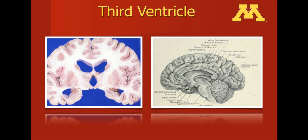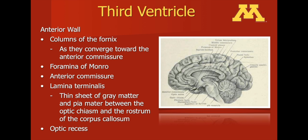Also appreciating in this picture the corpus callosum, which forms the roof of the third ventricle. This consists of the genu, the body, and also the splenium. The anterior wall of the third ventricle is formed by the columns of the fornix, the fornix being involved in learning and memory. The foramen of Monroe is the connection between the third ventricle and the lateral ventricles. An important structure is the lamina terminalis — a thin sheet of gray matter and pia between the optic chiasm, as can be seen on the picture on the right-hand side of your screen, and the rostrum of the corpus callosum.